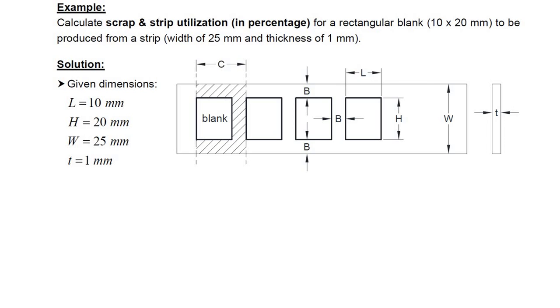Let's see an example. Here, a rectangular stock has been given wherein we are supposed to draw this type of rectangular blanks of size 10 by 20. So calculate scrap and strip utilization in percentage for a rectangular blank to be produced from a strip width of 25 millimeters and thickness of 1 millimeter.